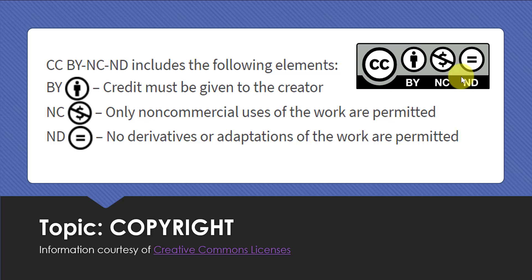Here I have some information from the Creative Commons licenses website. You basically have to figure out what each of these little icons means. For a non-derivative work — something that doesn't allow you to adapt it or make copies of it — you're going to see a little symbol that looks like an equal sign, and it's going to say ND next to it. That basically means you cannot make any copies of the work. It has to exist on its own.